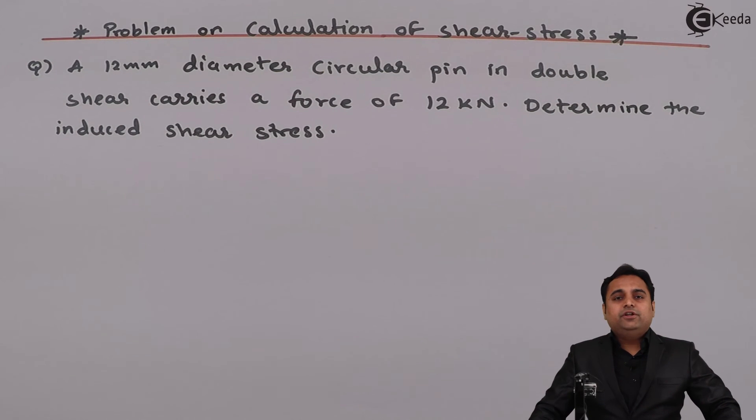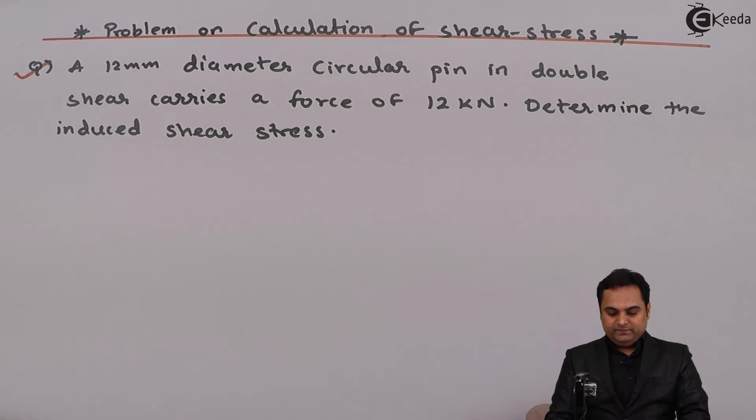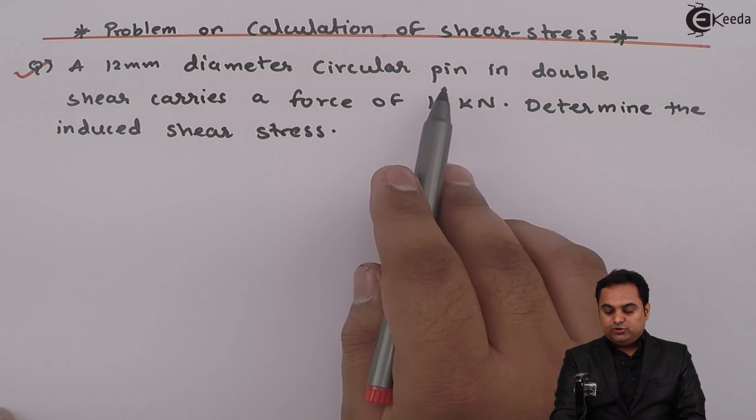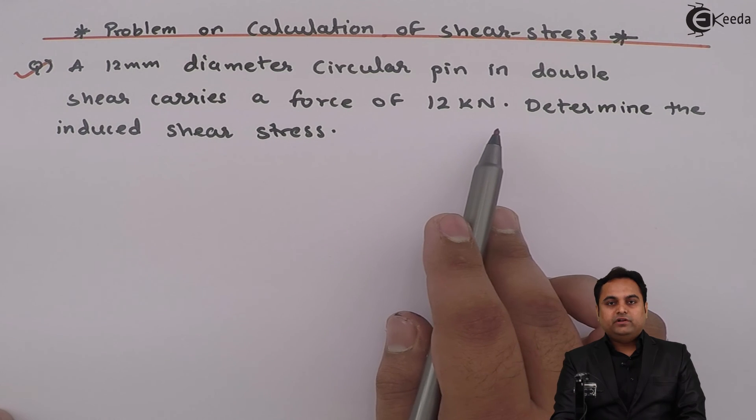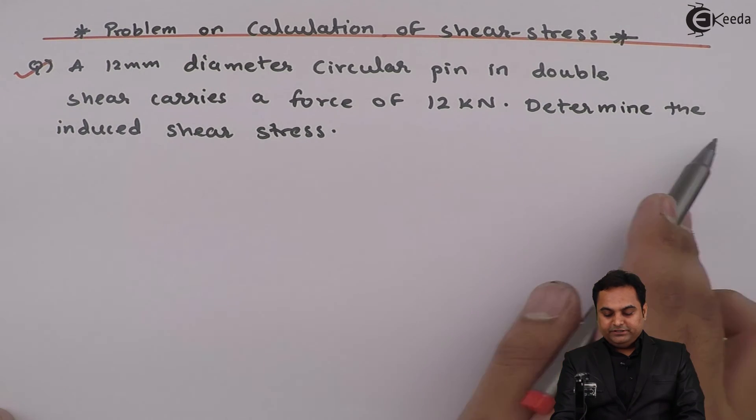Hello friends, in this video we are going to see a problem on calculation of shear stress. A 12mm diameter circular pin in double shear carries a force of 12 kilonewton. Determine the induced shear stress.